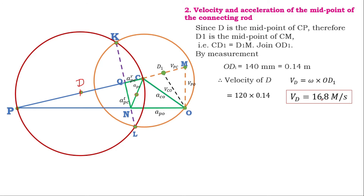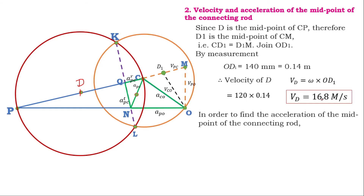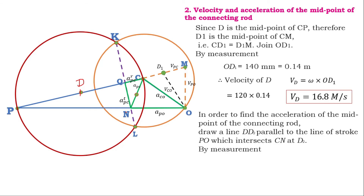To find the acceleration of the midpoint, we draw a line parallel to the connecting rod PC from midpoint D. CN is the final acceleration vector of the connecting rod. Where this parallel line cuts CN, we mark the point D2. We then join O to D2. By measurement, O to D2 is 193 mm (0.193 meter).